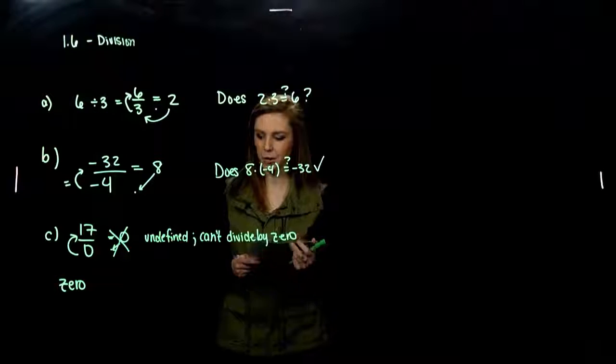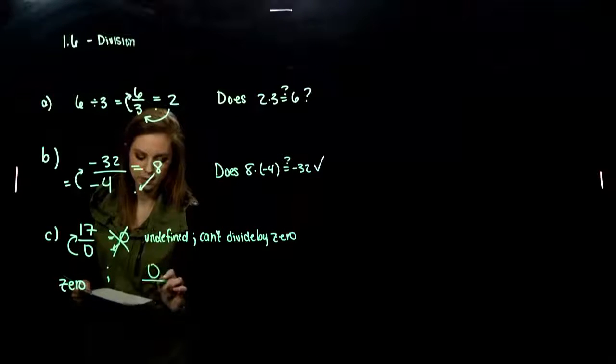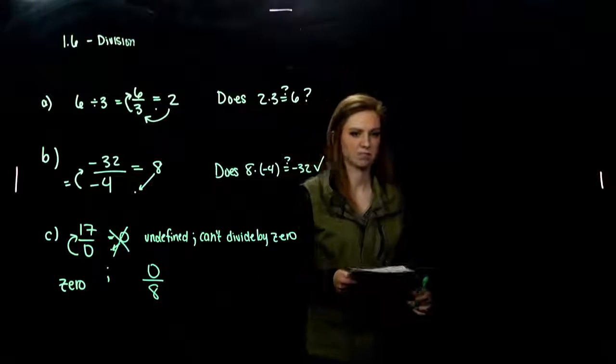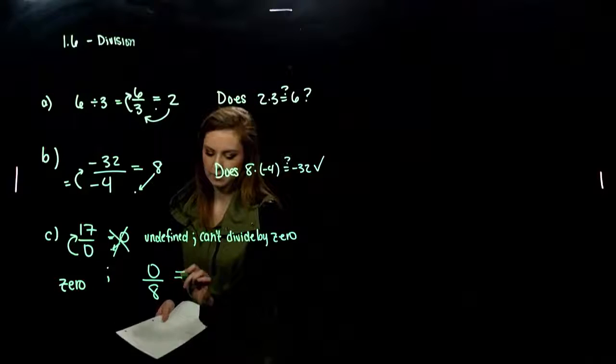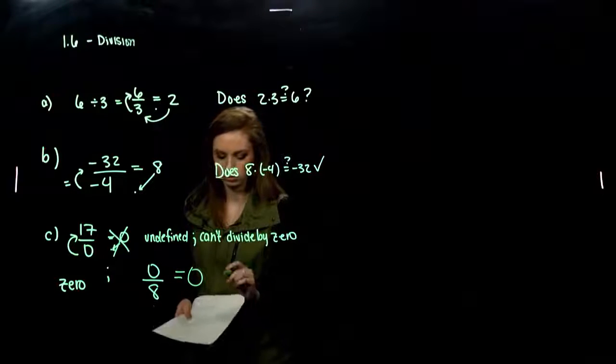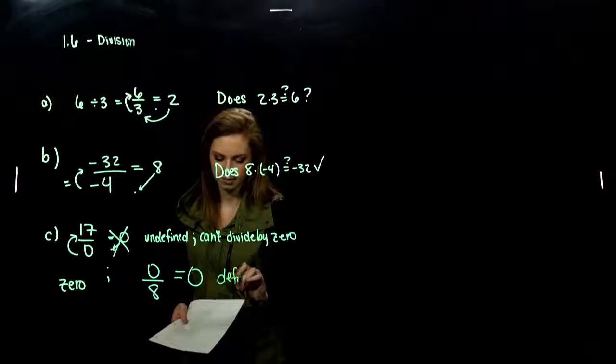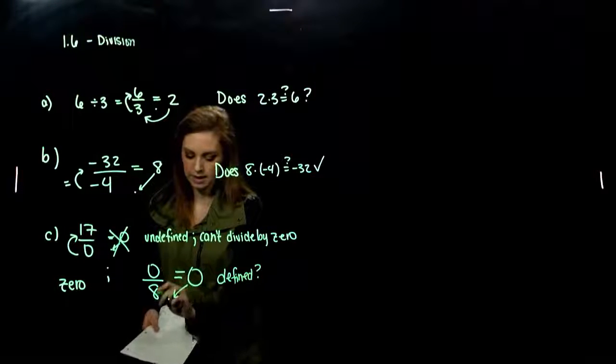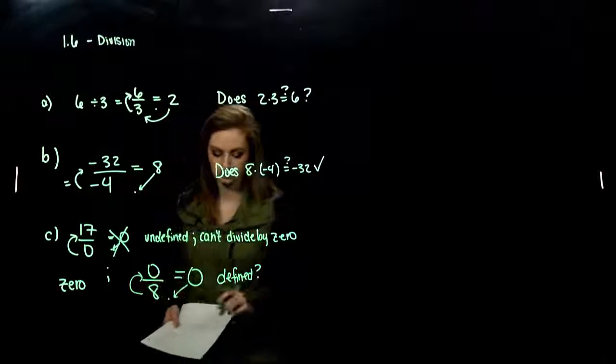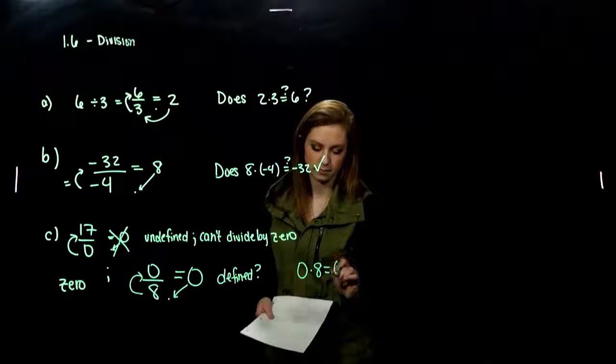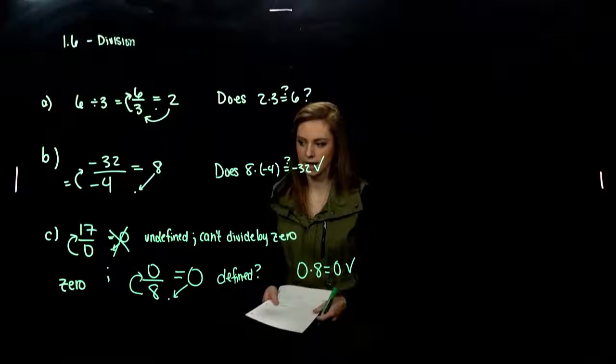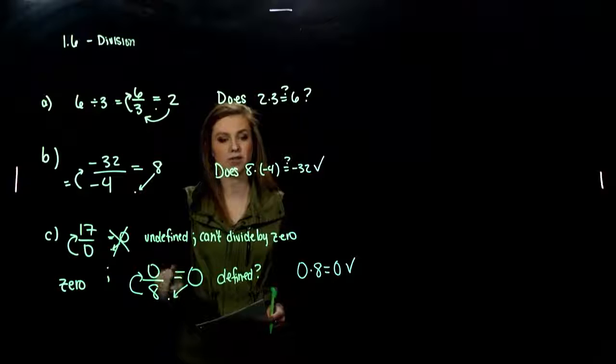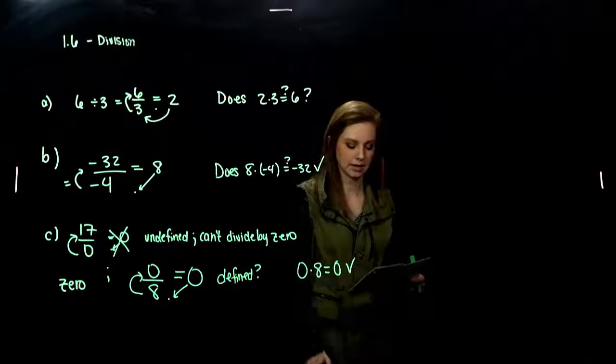But what do we want to note? What is 0 divided by 8? Is that defined? What's it equal to? 0 divided by anything is 0. Is that defined? Is that legit? So let's ask. 0 times 8, is that equal to 0? Yep. That's true. So again, division by 0, not possible. It's undefined. But 0 divided by something, we always get 0 out.